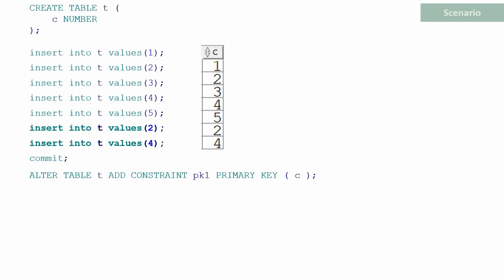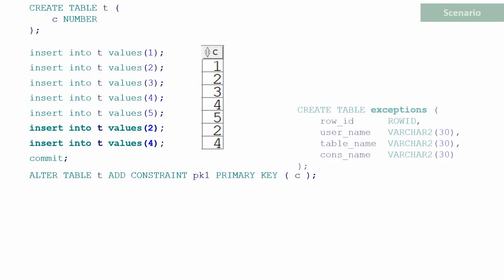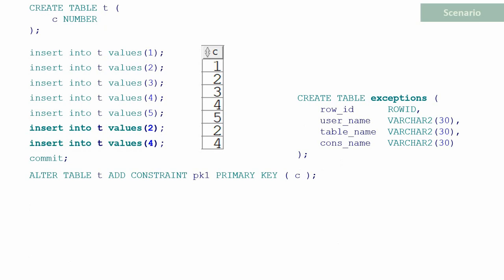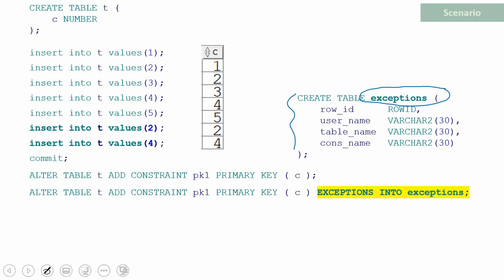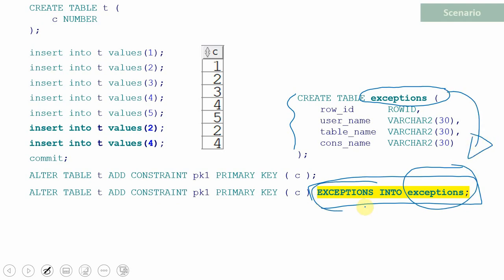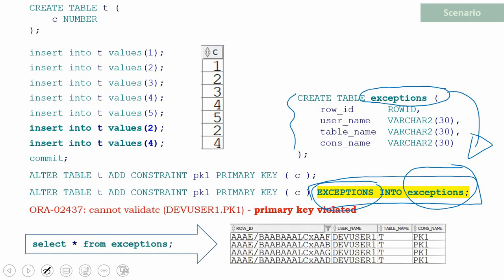To summarize: we created the table, populated data, and tried to create a primary key constraint which threw an error. We then created an exceptions table with four columns and used the EXCEPTIONS INTO keyword as part of the ALTER TABLE constraint creation syntax. Using this, we can identify the records primarily responsible for the validation error.